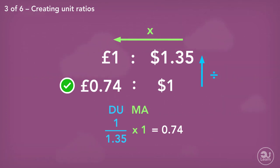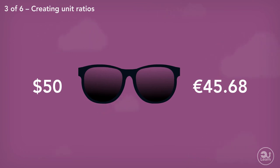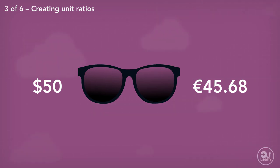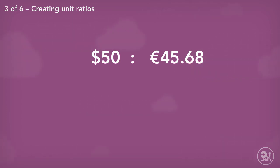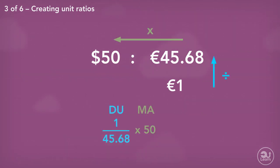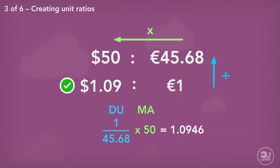Let's have a look at a potential problem using the unit ratio. A pair of sunglasses costs $50; in euros, the same pair of sunglasses costs €45.68. How many dollars make one euro, and how many euros make one dollar? We essentially want to convert the ratio into two different unit ratios. The first part wants to see how many dollars one euro is worth, so we start with 1 under the euros, then divide up and multiply across: 1 divided by 45.68, multiplied by 50, gives us 1.0946. Therefore approximately $1.09 is equal to €1.